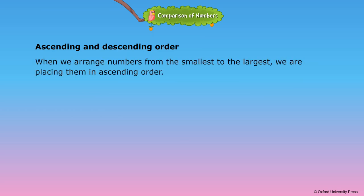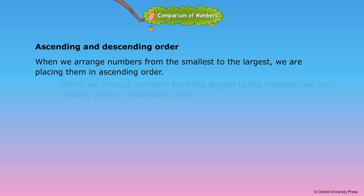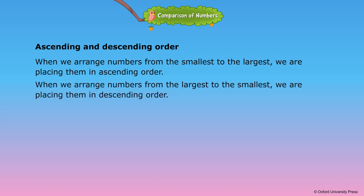Ascending and descending order. When we arrange numbers from the smallest to the largest, we are placing them in ascending order. When we arrange numbers from the largest to the smallest, we are placing them in descending order.